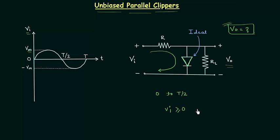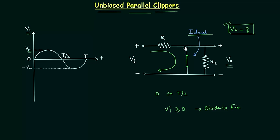So the diode is forward biased. I will replace the diode with its equivalent model — since the diode is ideal, I replace it with a short circuit. The output voltage is equal to 0 because there will be no current through the load resistance; current will choose the short-circuited path and will not flow through the resistance. So Vo is equal to 0 for the first half cycle.